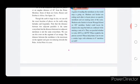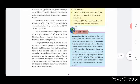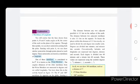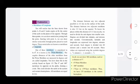Though the earth is huge in size, we can tell the exact location of a place on earth using latitude and longitude. Note that the earth distance between adjacent parallels is the same everywhere, but the distance between two adjacent meridians is not the same everywhere. We can see this even on the segment of an orange. The distance between meridians is maximum on the equator and goes on reducing towards the poles. At the poles it is zero.